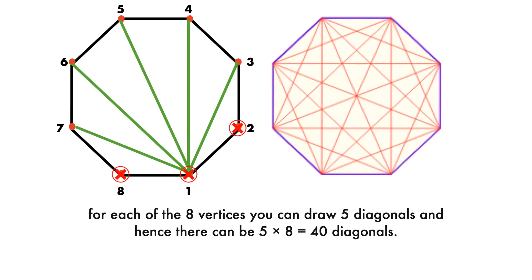But remember each diagonal is counted twice, once from each of its ends. Thus there are 20 diagonals in a regular octagon.